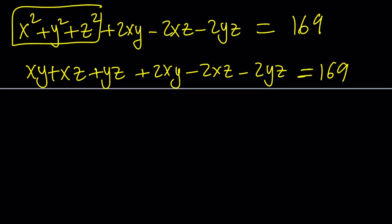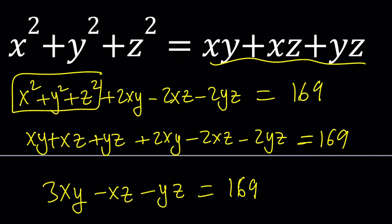Let's go ahead and simplify this. xy plus 2xy is 3xy, and then xz minus 2xz is minus xz, and then same thing with yz. And that's equal to 169. Do you think that's helpful? Doesn't look very promising, but that's what we have.